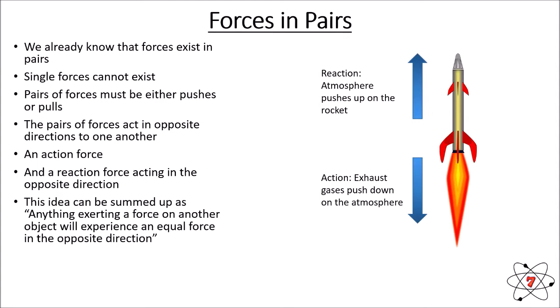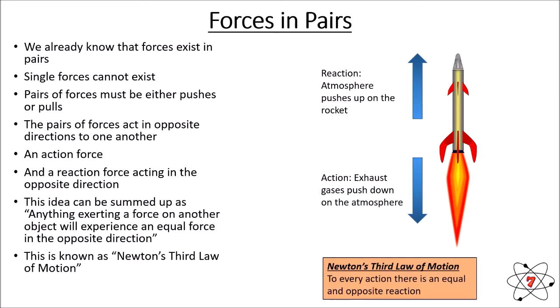This idea about actions and reactions can be summed up simply: anything exerting a force on another object will experience an equal force in the opposite direction. This is known as Newton's third law of motion — to every action there is an equal and opposite reaction. For example, if the exhaust pushes down with 10,000 newtons, the reactionary force pushes the rocket up with 10,000 newtons. The reaction is in the opposite direction to the action, and of the same magnitude.